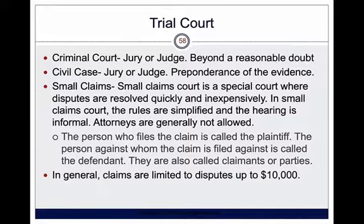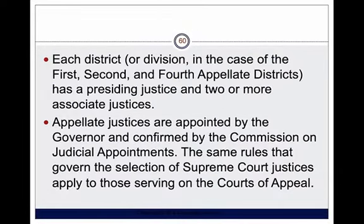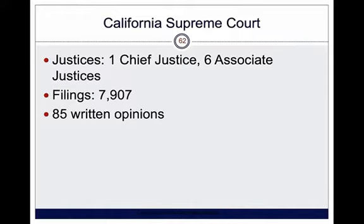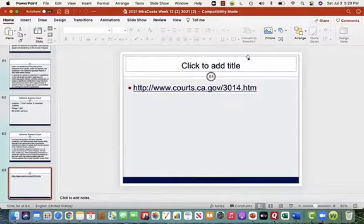Small claims courts handle disputes less than $10,000 in a judge-only setting — no lawyer needed. The person who files is called the plaintiff and they go against the defendant. Then we have our Court of Appeals, and the California Supreme Court, which has seven justices as opposed to the United States Supreme Court's nine, and hears about 7,900 cases a year with about 85 cases actually heard. Generally these justices are very diverse. That's our court system — thank you, and we'll see you soon.